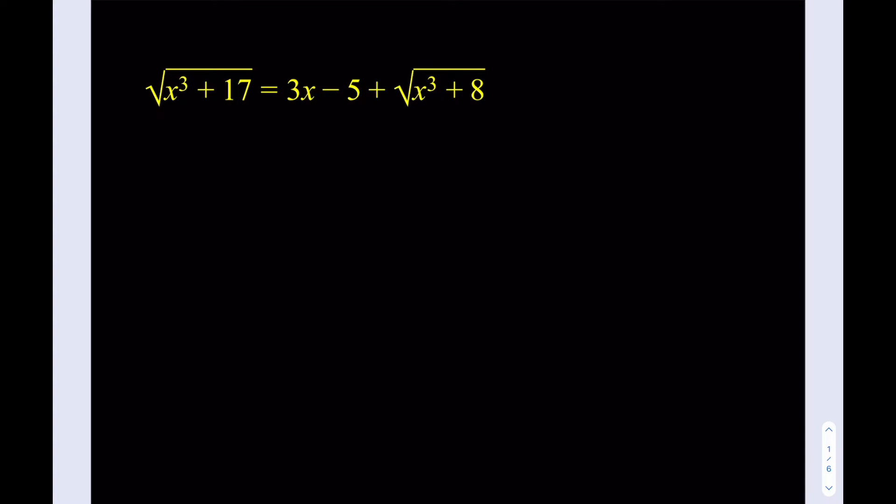That's going to give us, so I'm going to square this expression here. It's going to give me x cubed plus 17. And on the right hand side I can treat it as a sum of two things. I can square the first one and square the second one, but I also need to write down the 2ab. Let's not forget that. So it's going to look like 2 times 3x minus 5 multiplied by the square root of x cubed plus 8, plus I'm going to square the second term, which is x cubed plus 8. Awesome.